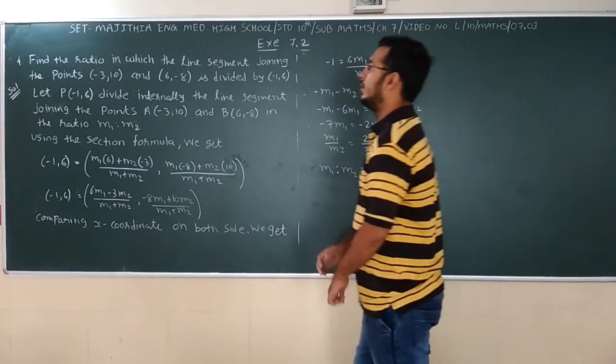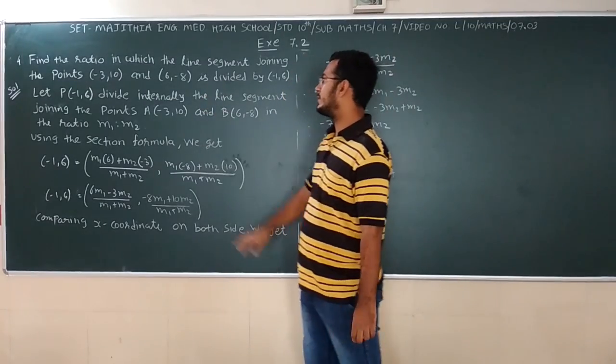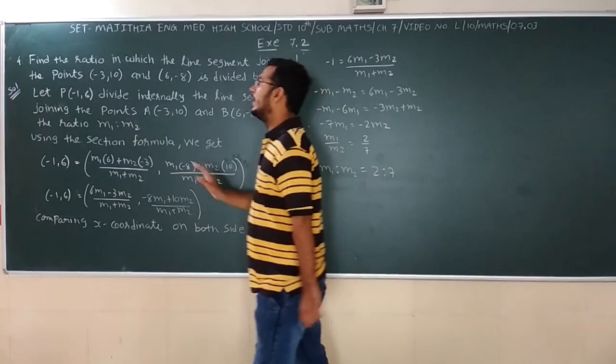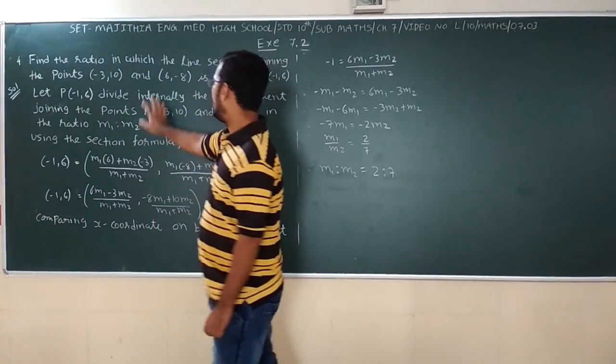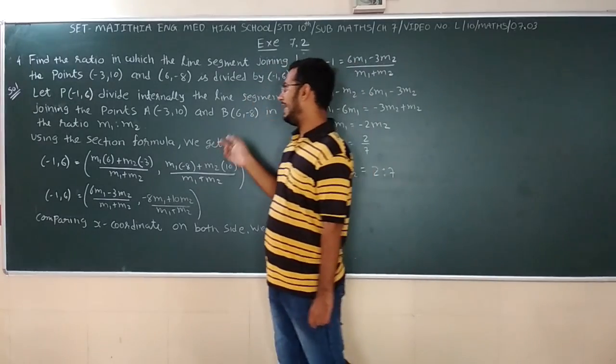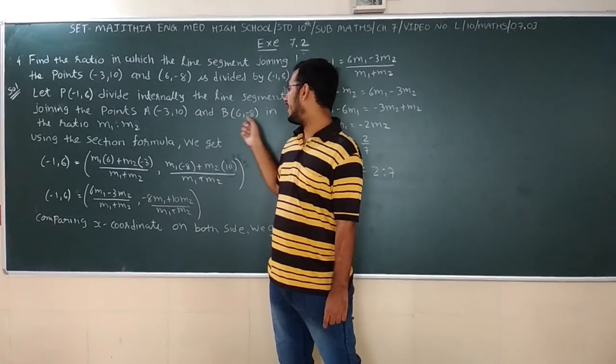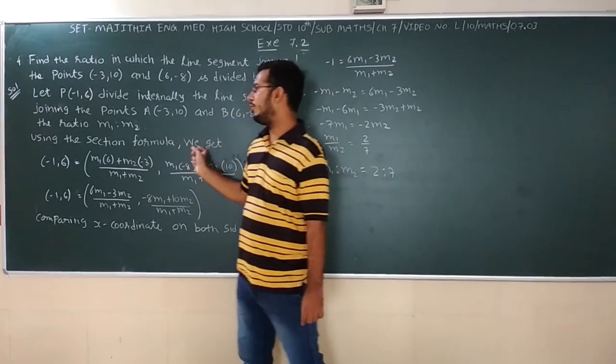Number 4. Finding the ratio in which P divides the line segment joining the points (-3,10) and (6,-8) divided by P(-1,6). We have to find here the ratio M1:M2. Here the points A, B and P are given. So let P(-1,6) divides the line segment in the ratio M1:M2. So using the section formula.